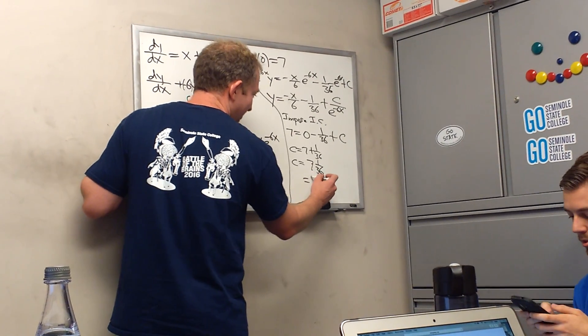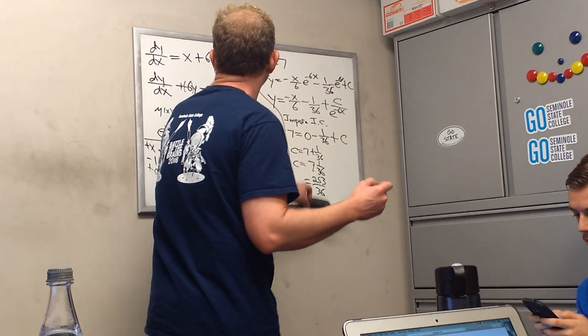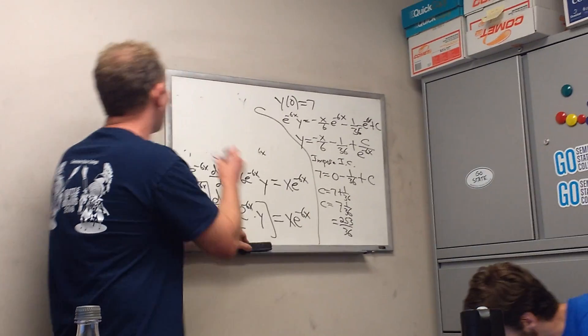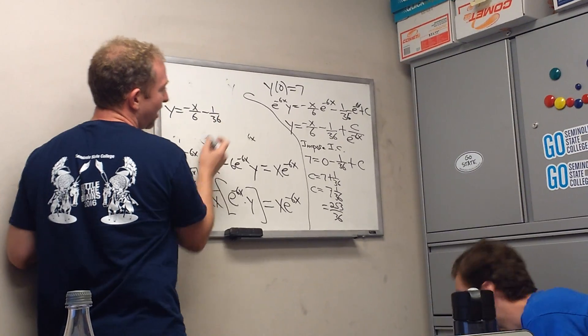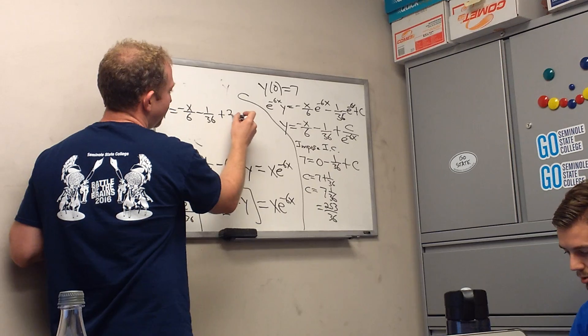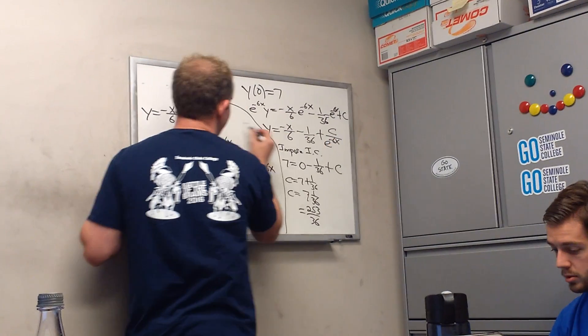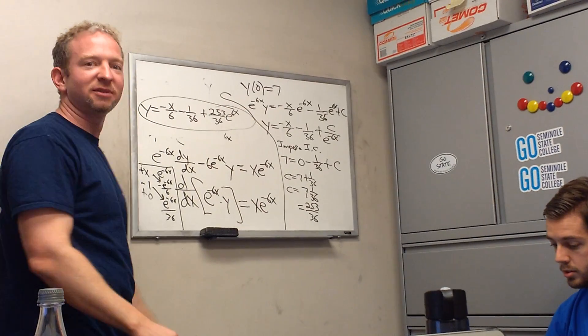253 over 36. Over 36. And if this is wrong, then we can just give up. So I'm going to erase this. So y is equal to negative x over 6 minus 1 over 36 plus 253 over 36. And I'm going to bring this upstairs and write it as e to the 6x. And that's it. That's it right there. That's it. That make sense?